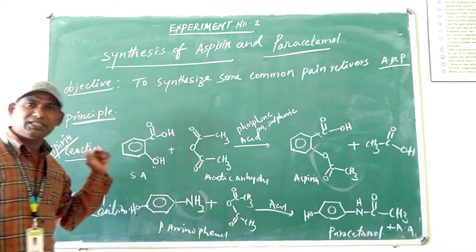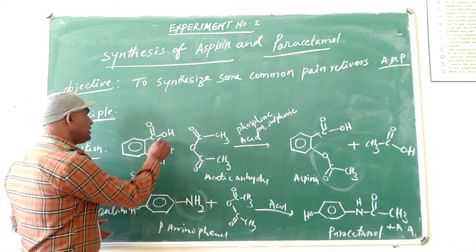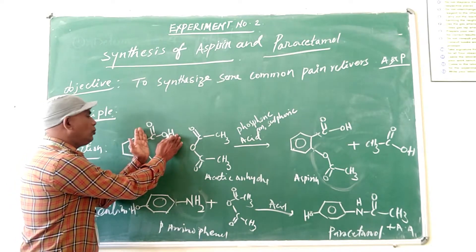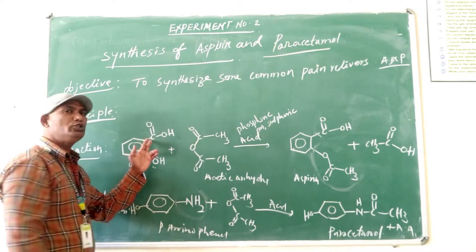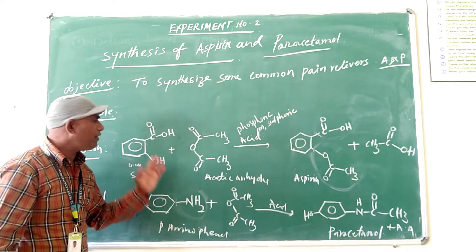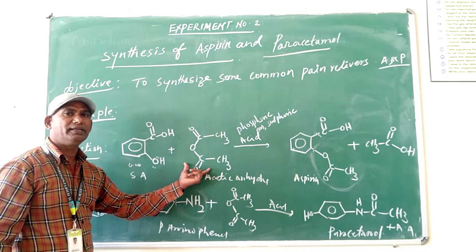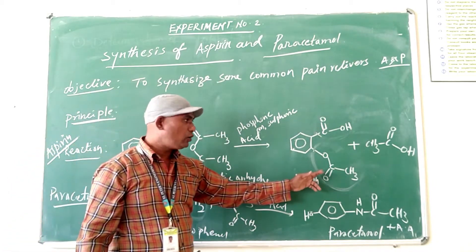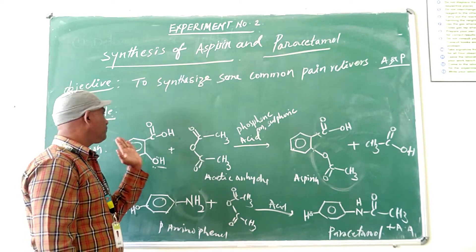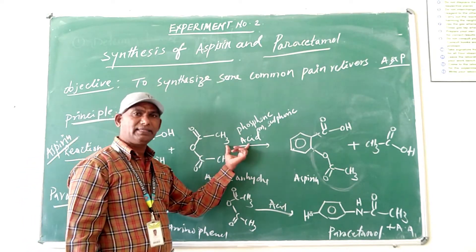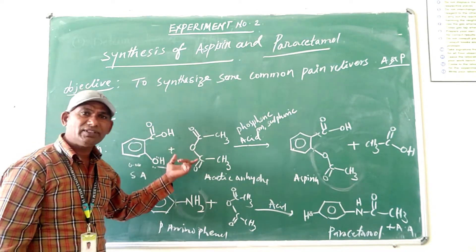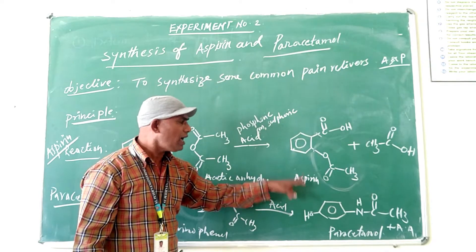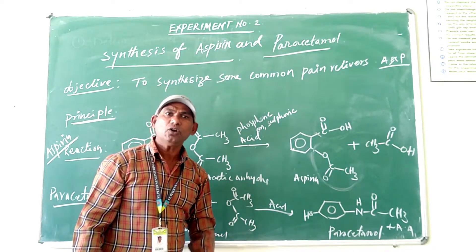Now the reaction: salicylic acid is the basic material — ortho-hydroxybenzoic acid, containing the hydroxy O-H group and one acid group. This reacts with acetic anhydride, which reacts with the O-H group to form the ester. When salicylic acid reacts with acetic anhydride in the presence of an acid catalyst — either phosphoric acid or sulphuric acid — it forms the aspirin compound.